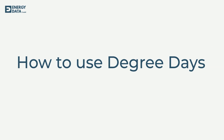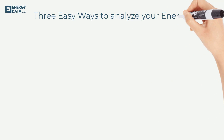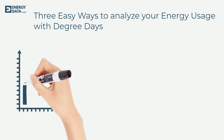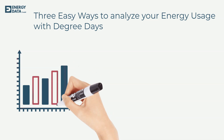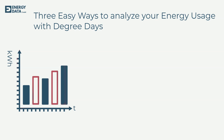In this video I show you three easy ways to analyze your energy usage with degree days. Degree days are used to take weather out of the equation when analyzing energy consumption. ISO 50001 calls this normalization. This is a basic concept that should be applied by anyone who wants to analyze and optimize their energy usage.